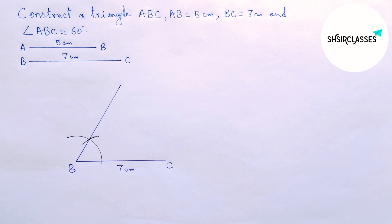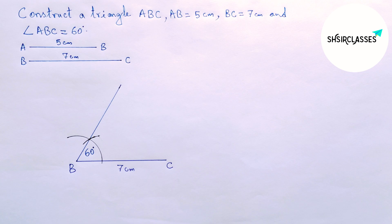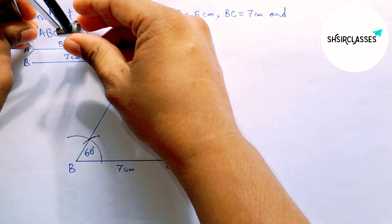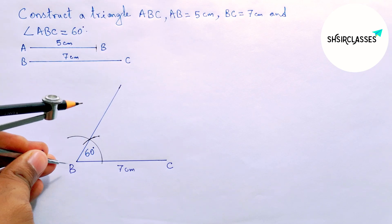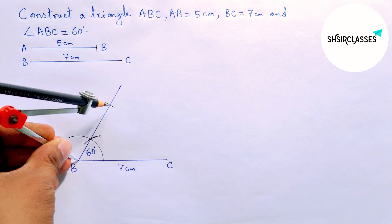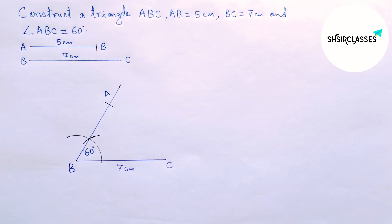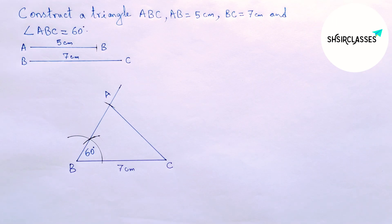Next, taking 5 centimeter length with the help of a compass. Putting the compass on point B and cutting here, labeling here A. Now joining A and C.